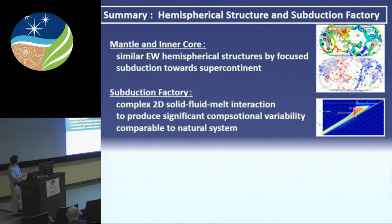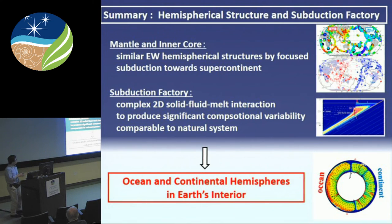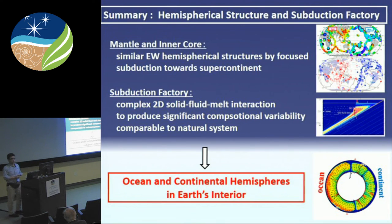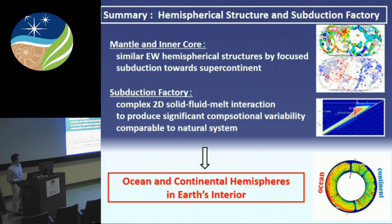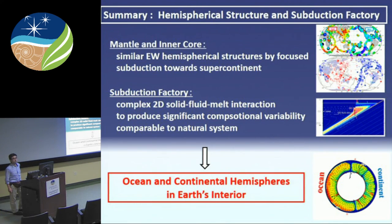In summary: the mantle and inner core have a similar east-west hemispherical structure, which is probably caused by focused subduction toward the supercontinent. Inside the subduction factory, complex 2D solid-fluid-melt interaction is important, but we can now evaluate these interactions, and they can actually produce significant compositional variability comparable to the natural system. We know that the ocean and continental hemispheres exist on the present-day Earth, and we think a similar kind of ocean and continental hemisphere also existed in the early Earth, based on this research. Thank you very much.